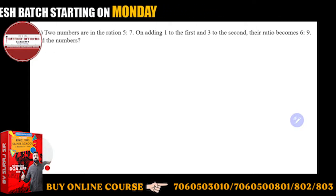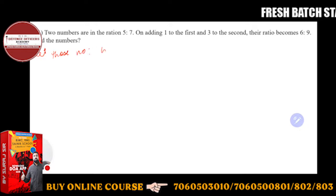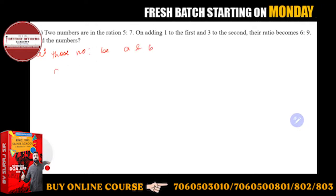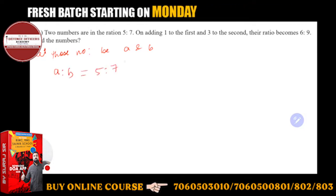Let those numbers be a and b. What is given to you? The ratio a is to b, that is given to you as 5 to 7.